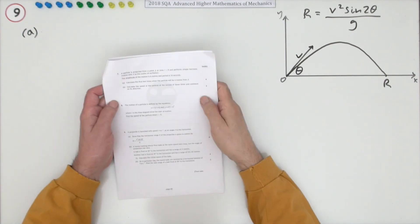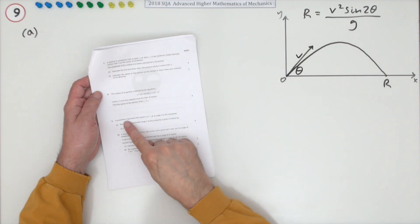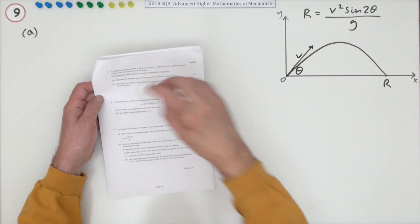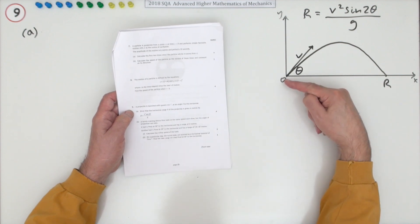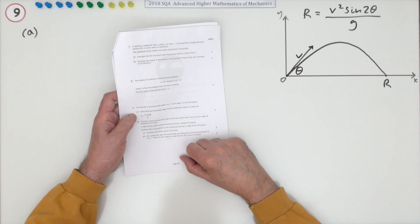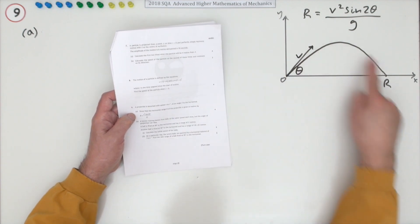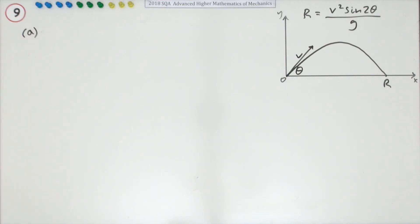So number nine then from the 2018 SQA Advanced Higher Mathematics of Mechanics. Projectile motion for 10 marks in three parts here. A projectile is launched with a speed v at an angle of theta, so there's the initial velocity vector.